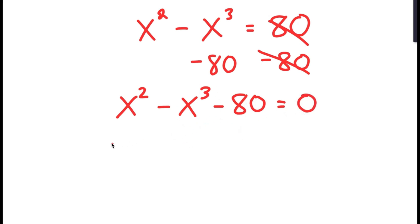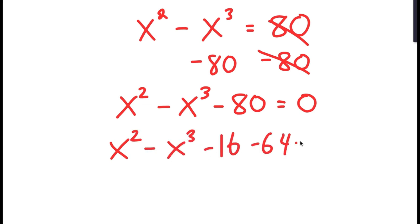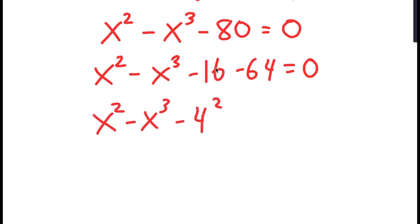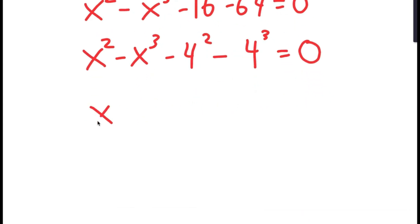From here, I'm going to replace negative 80 with negative 16 minus 64. I'm going to rewrite negative 16 as negative 4 squared and negative 64 as negative 4 to the power of 3. And I'm going to group x squared with negative 4 squared, and x cubed with negative 4 cubed.